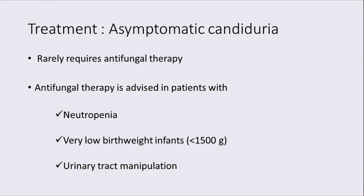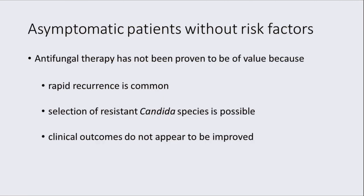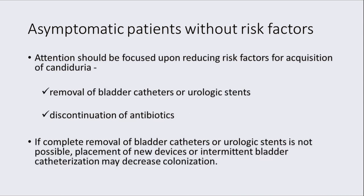Asymptomatic candiduria rarely requires treatment. Treatment is only advised if the patient is neutropenic, a very low birth weight baby, or has urinary tract manipulation planned. For asymptomatic patients without risk factors, antifungal therapy has not been proven of value because of rapid recurrence and the presence of resistance. Attention should be focused on reducing risk factors, such as removal of bladder catheter or stent and discontinuation of ongoing antibiotics. If complete removal is not possible, replacement with a new device or intermittent bladder catheterization can be helpful.